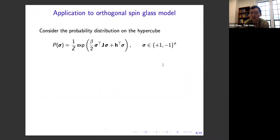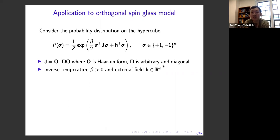This kind of AMP algorithm can potentially be applied to many statistical and probabilistic problems. In the second half of my talk I'll describe an application to probably the simplest model in this class: a spin glass model. I'll consider a probability distribution on the binary hypercube — over vectors sigma in {+1, -1}^n. The Hamiltonian consists of two terms: a couplings term describing interactions between spins of sigma, defined by matrix J, which I assume is orthogonally invariant with Haar-uniform eigenvectors.